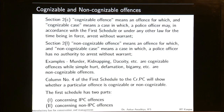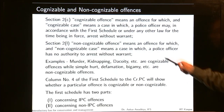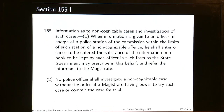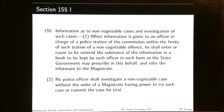Section 2C defines a cognizable offense as one for which a police officer may arrest without warrant in accordance with the first schedule or under any law in force. A cognizable offense also allows investigation without the permission of the court — the police officer can directly start the investigation. A non-cognizable offense means the police officer has no authority to arrest without warrant, and investigation will only start with the permission of the court, as per section 155.